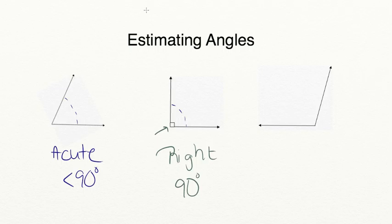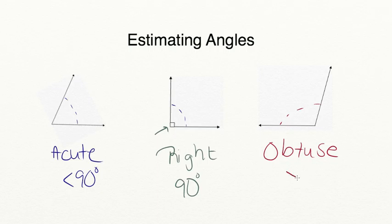Anytime you have an angle that is greater than 90 degrees, we call that an obtuse angle. Let's review for a moment: an angle with a degree less than 90 is acute, any angle that is exactly 90 degrees is a right angle, and any angle that is greater than 90 degrees is obtuse.